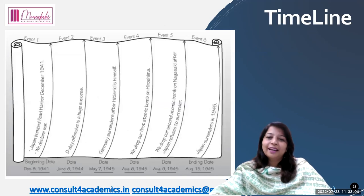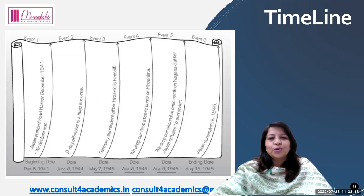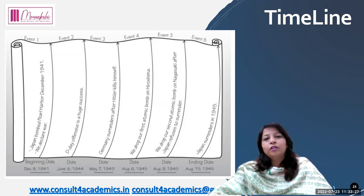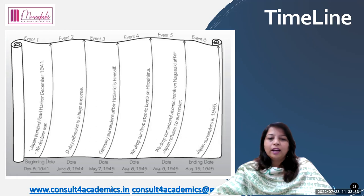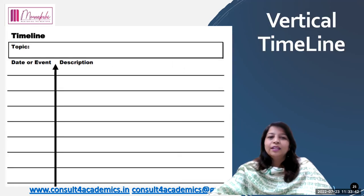Have a look at this graphic organizer — this is a timeline where students will be able to list different kinds of events: event one, two, three, four, five, six, and they'll mention the dates. We have been doing it in social sciences and history, and in languages too when talking about autobiography or biography of any character. Here is another layout for the timeline graphic organizer — a vertical timeline.